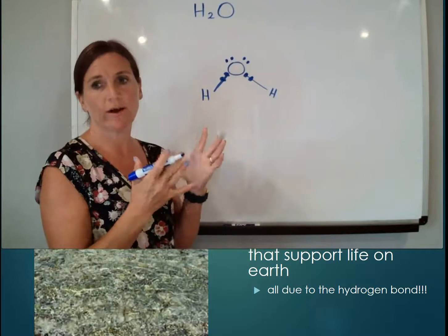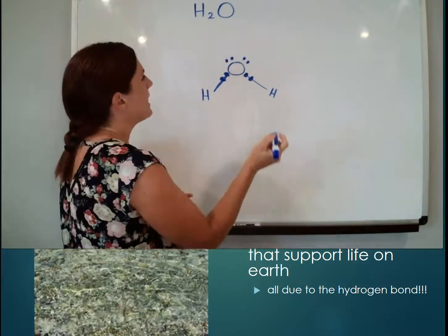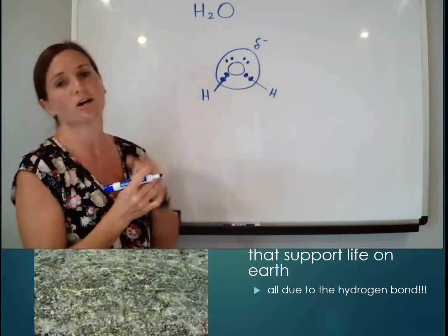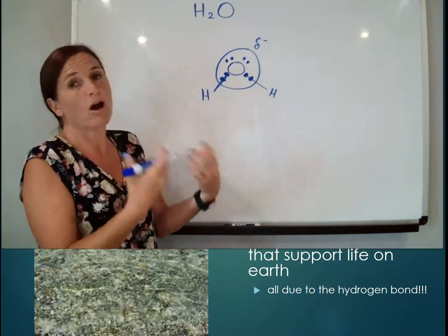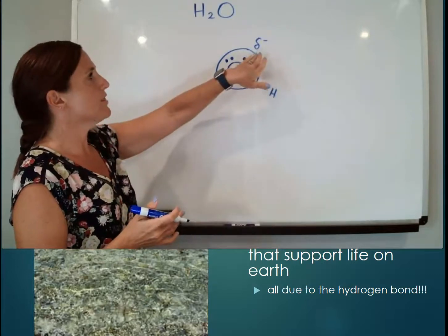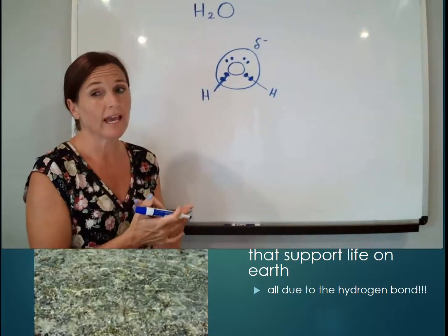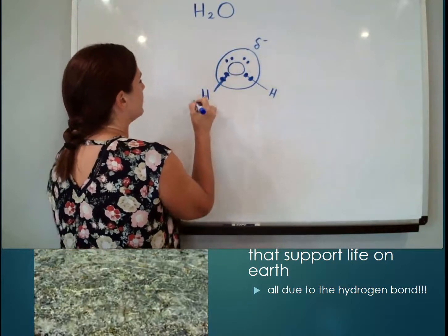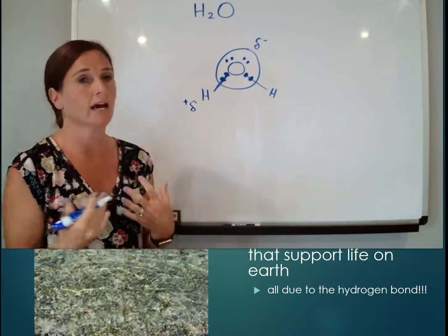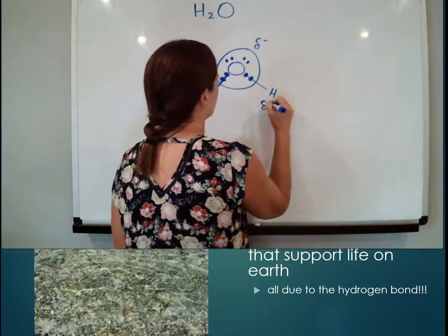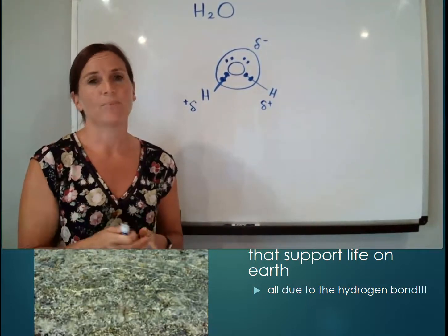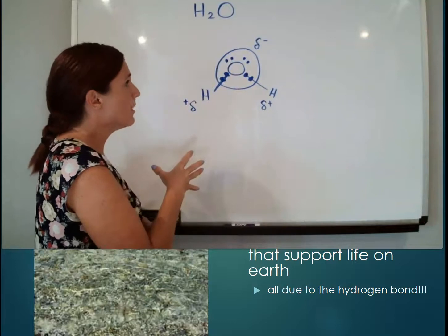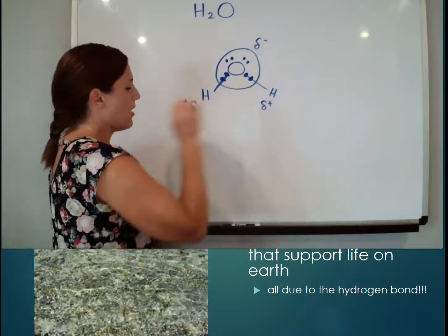The oxygen also has some lone pair electrons on it. All of this makes oxygen partially negative — a partial charge, meaning it's not totally negative but it acts negative, it's mostly negative. That also means the electrons are leaving the hydrogens, making them partially positive. So we have a partially negative oxygen and partially positive hydrogens.